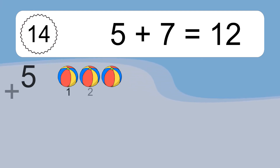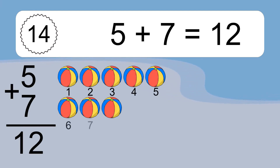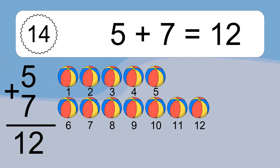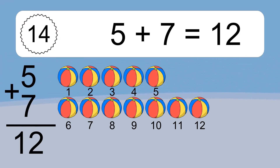5 plus 7 equals what? 5 plus 7 equals 12. Let's count it: 1, 2, 3, 4, 5, 6, 7, 8, 9, 10, 11, 12.